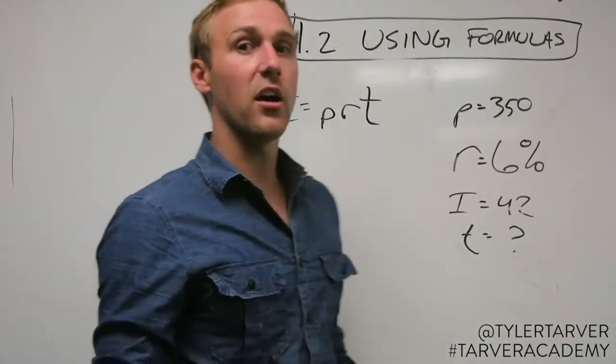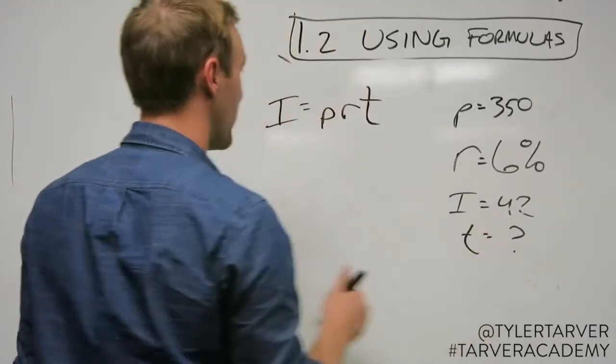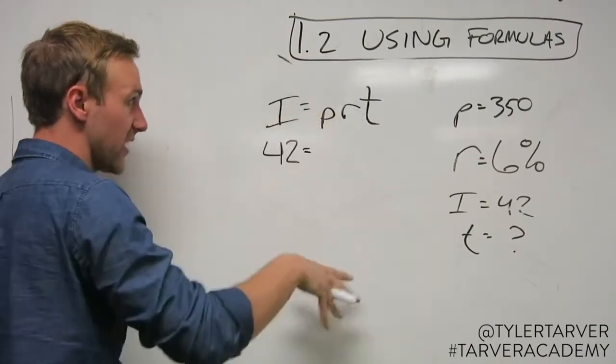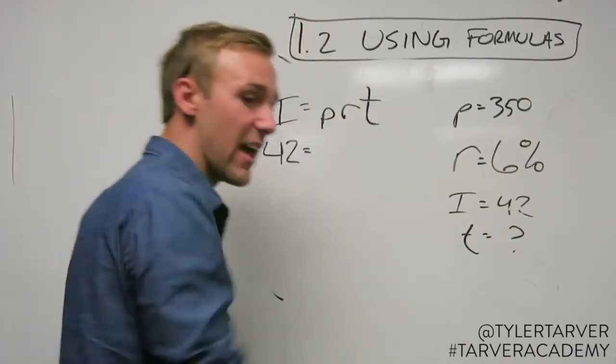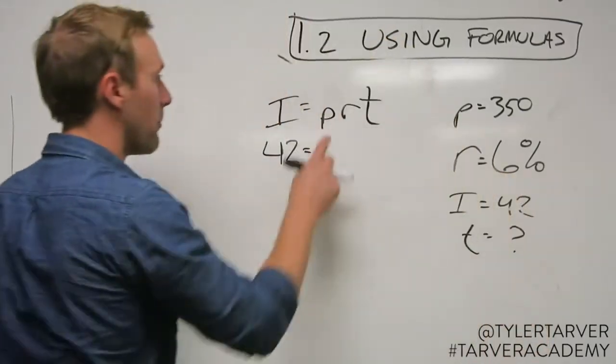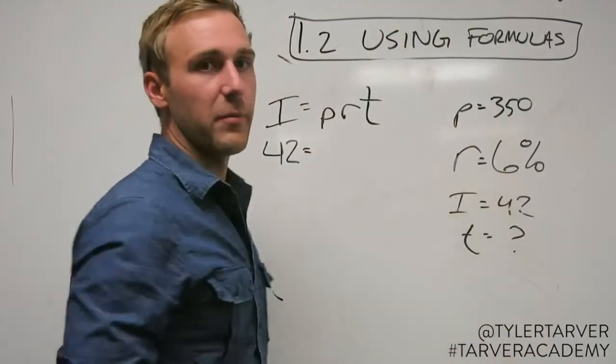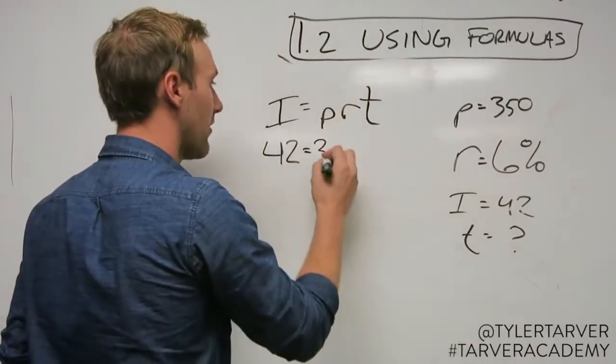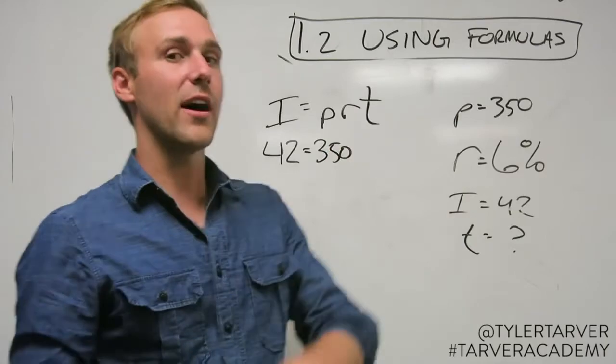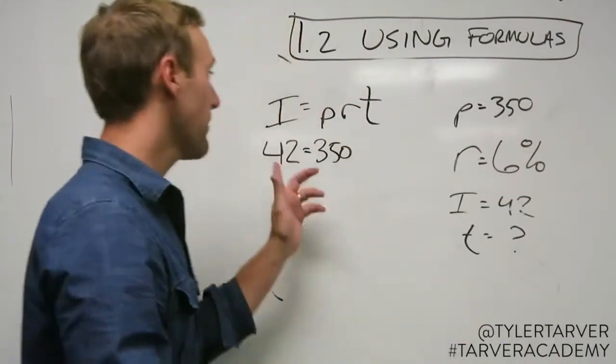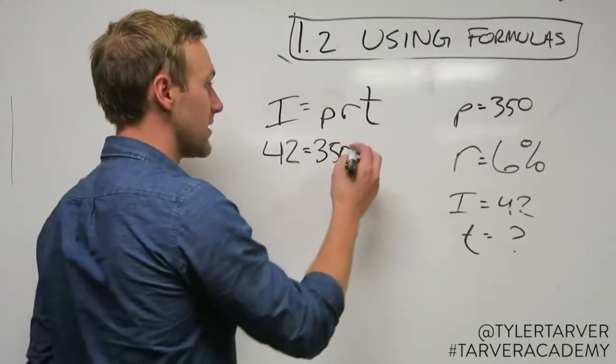Interest, how much money do we want to earn? 42 bucks. Plug it in for I. Bring everything straight down, bring down your equal sign, bring down everything. That's how you do math. Principal, 350 bucks. Let's say I have 350 bucks, that's how much I can put into my account. I want to know how long do I have to keep 350 bucks in the bank's hands before they're going to give me 42 bucks for it.